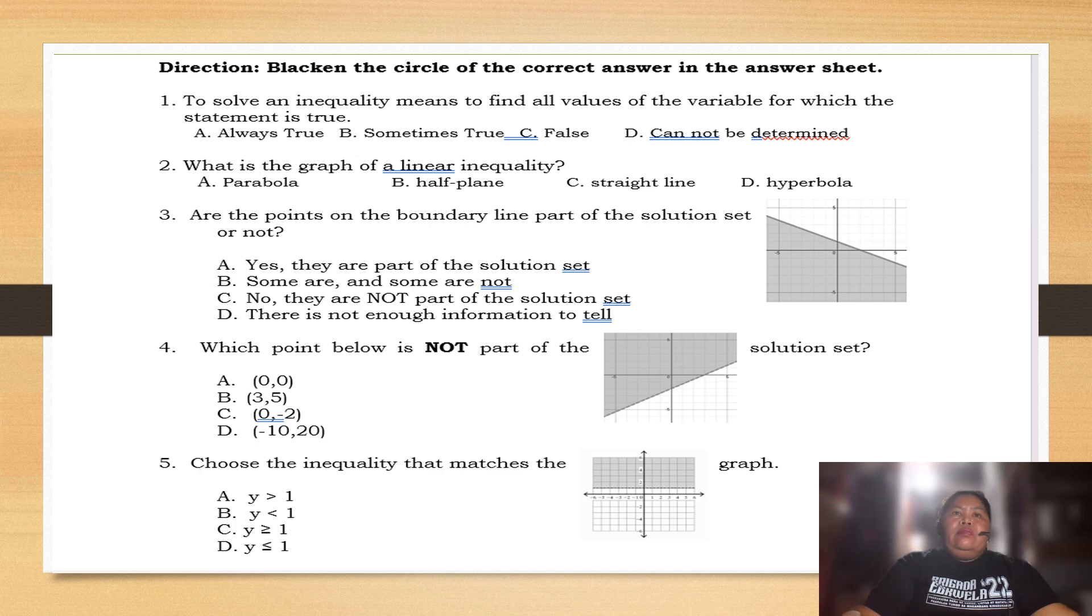To solve an inequality means to find all values of the variable for which the statement is true. A, always true, B, sometimes, C, false, or D, cannot be determined. What do you think is the answer? The answer here is letter A.